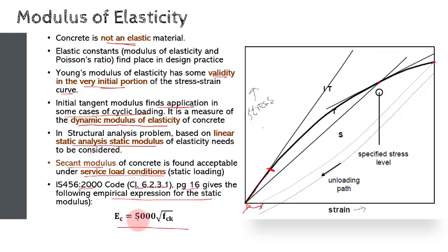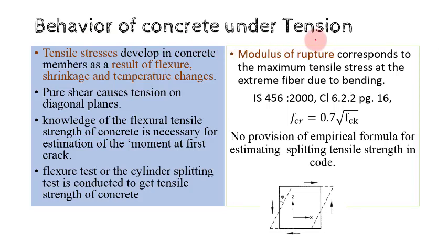Behavior of concrete under tension: Tensile stresses develop in concrete members as a result of flexure, shrinkage and temperature changes. Pure shear causes tension on diagonal planes. Knowledge of the direct tensile strength of concrete is useful for estimating the shear strength of beams with unreinforced webs. To illustrate this, consider an element subjected to pure shear. Under the action of this shear stress, this element is going to deform. It can be seen that one diagonal has shortened—that is, it is in compression—whereas the other diagonal length has increased, meaning this diagonal is under tension.